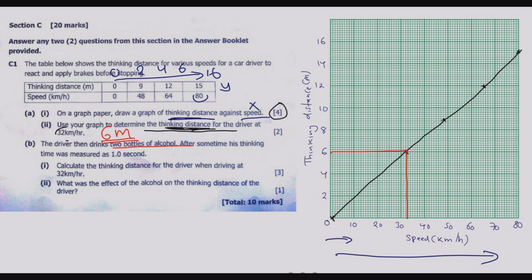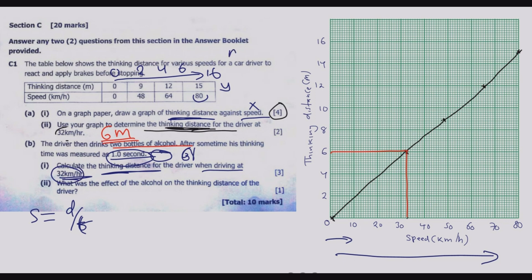We have been given the speed — 32 km/h — and the thinking time of 1.0 second. We know that speed equals distance over time. The time is in seconds and we want distance in meters, so there are two approaches: convert the time to hours and find the distance, then convert back to meters; or convert the speed to meters per second first, then multiply by time.